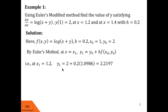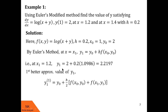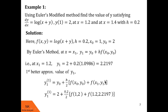According to Euler's modified method, the first better approximate value of y1 is: y11 = y0 + (h/2)·[f(x0, y0) + f(x1, y1)]. y0 = 2, h = 0.2, f(x0, y0) = 1.0986 (already calculated). For f(x1, y1), we substitute x1 = 1.2 and y1 = 2.2197 into the definition of f. After calculation, y11 = 2.2328.